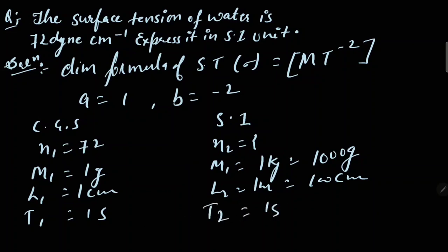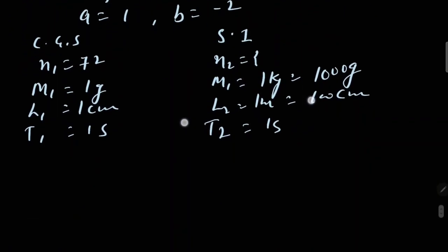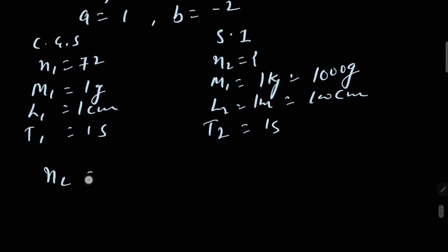Now we will put all this in the formula. So n2 will be equal to n1, which is 72, multiplied by m1 over m2 to the power 1, which is 1 over 1000 to the power 1, and t1 over t2 to the power -2, which is 1 over 1 to the power -2.